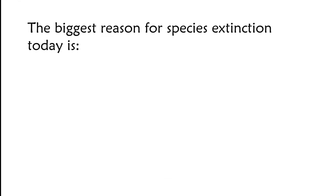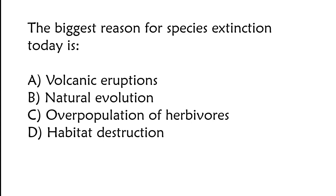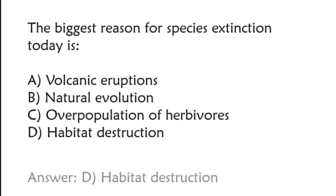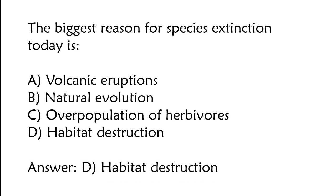The biggest reason for species extinction today is: A) volcanic eruptions, B) natural evolution, C) overpopulation of herbivores, D) habitat destruction. The correct answer is option D, habitat destruction.